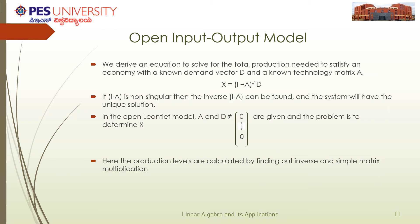The derived equation needed to solve for the production level x is the inverse of (I - A) times the demand matrix D. When (I - A) is non-singular, we will have a unique solution and the system is consistent. This is the procedure for finding the production level x using the open input-output model.